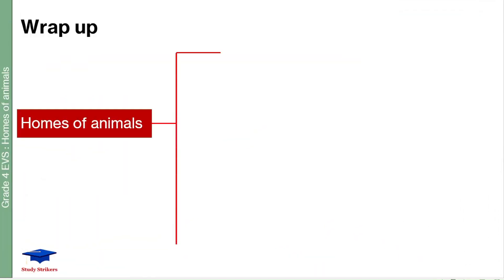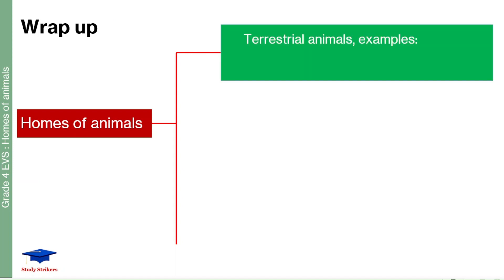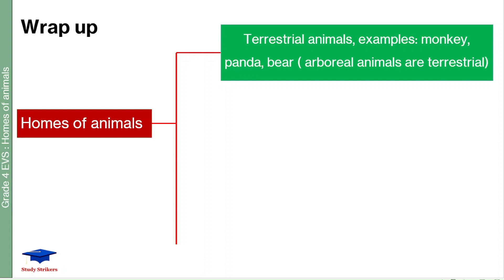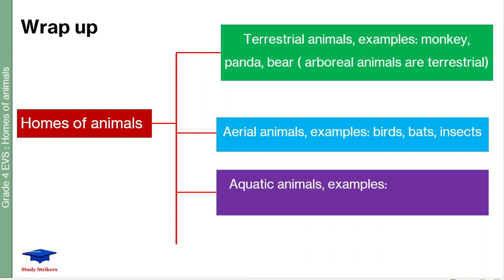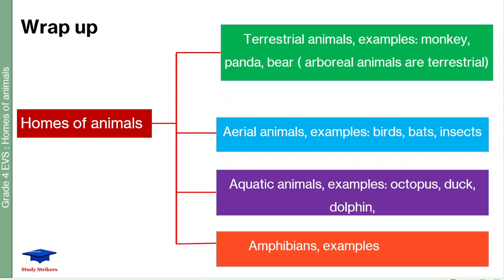Let's wrap up homes of animals. Terrestrial animals: examples are monkeys and koala bears. Aerial animals: examples are most birds, bats, and insects. Aquatic animals: examples are octopus, dolphin, duck, and most fish. Amphibians: examples are frogs and toads.